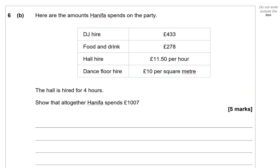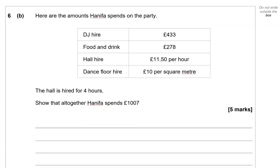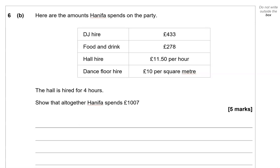Here are the amounts Hanifa spends on the party. DJ hire £433, food and drink £278, hall hire £11.50 per hour, dance floor hire £10 per square meter. The hall is hired for four hours. Show that altogether Hanifa spends £1007. Okay, so the DJ hire, that is a fixed amount, £433, doesn't depend on the number of hours or the space taken. So is food and drink. Then hall hire, that is £11.50 per hour. The hall is hired for four hours so we're going to do 4 times 11.50, which is £46.